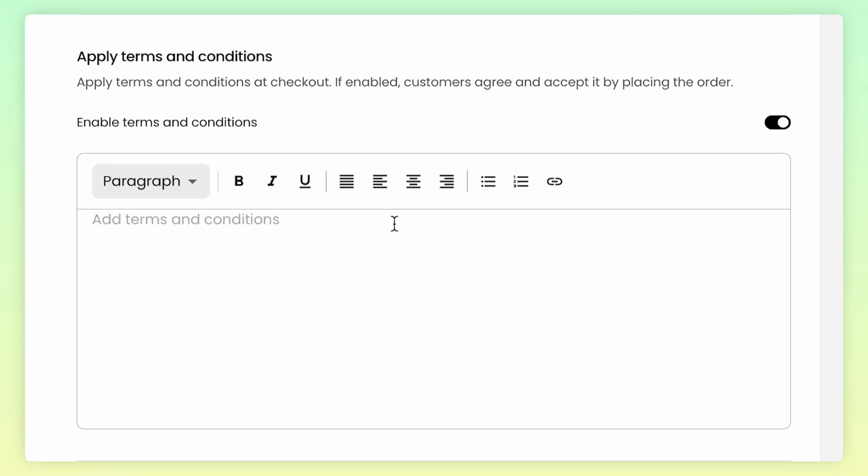Just hit the toggle button to enable it, and here you can add specific terms and conditions that will apply to all your digital products.